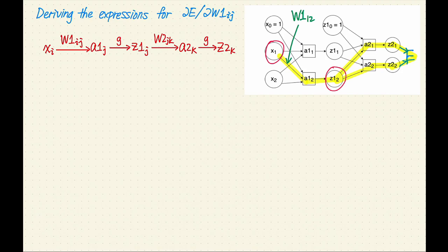This weight affects a1 sub 2, which affects z1 sub 2. From there, it affects the error or loss E through two paths, one through each of the two output units. Because of this, we will have a summation with two terms in our expression.